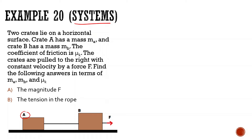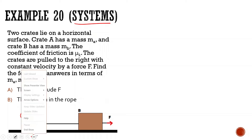Find the following answers in terms of MA, MB, and μk — the magnitude of friction. Let me draw the forces for these items, drawing from the center.